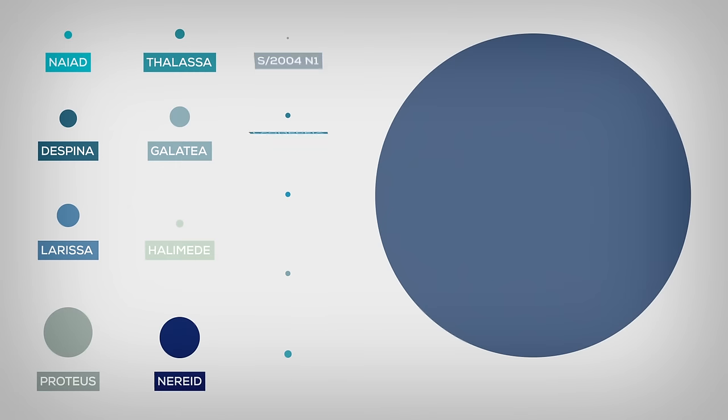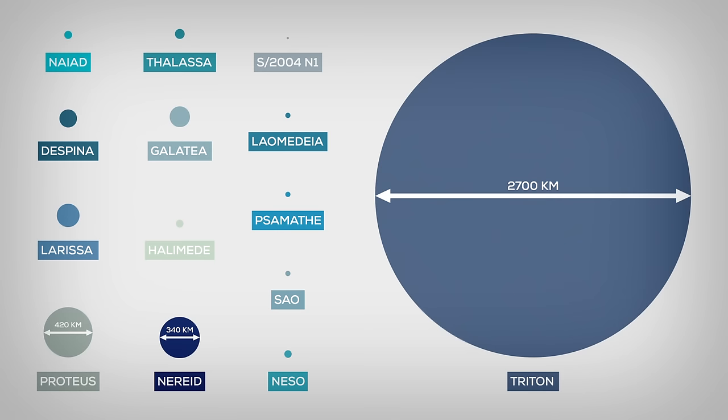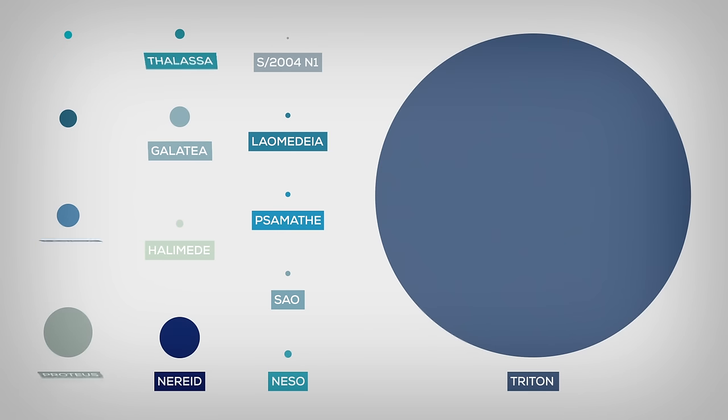The 14 moons of Neptune are a strange bunch. Most of them are small potato-shaped pieces of ice and rock. Some are so far away from Neptune that they need 29 years to circle Neptune once. Almost all of them are asteroids trapped by Neptune's gravity.